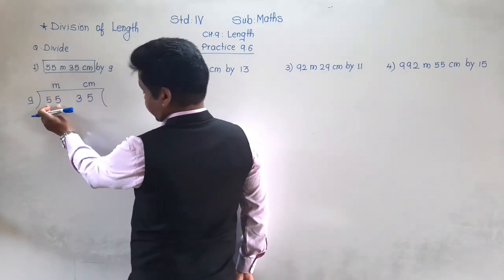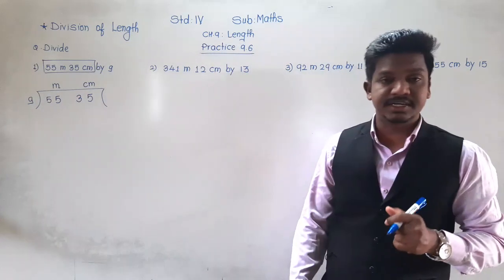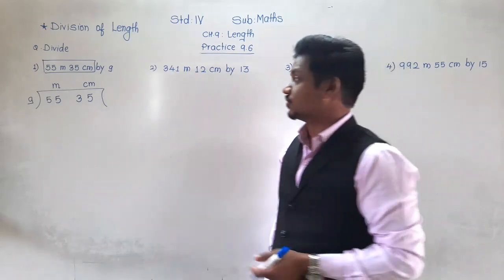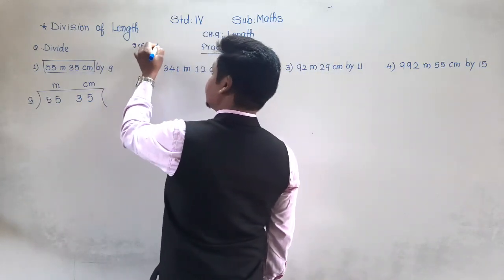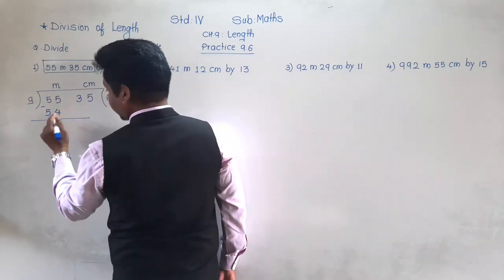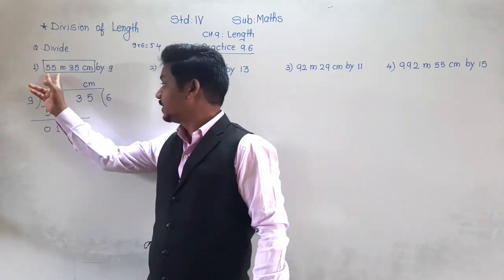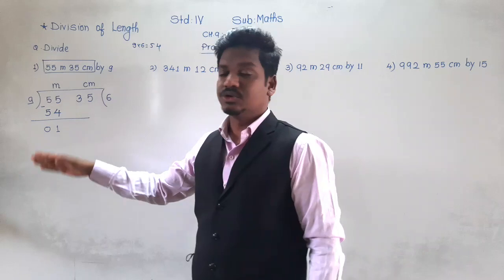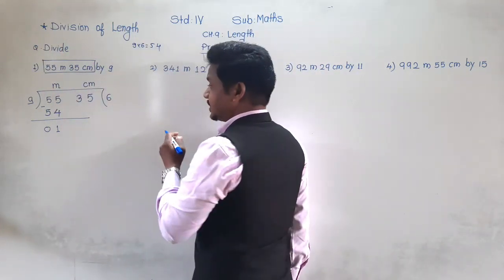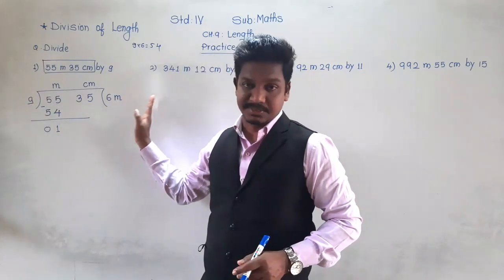First, we divide the meter column. There are 55 meters. Is 55 in the table of 9? The smaller number than 55 in the table of 9 is 54. 9 sixes are 54. Subtract 54 from 55: 5 minus 4 is 1, 5 minus 5 is 0. So we have divided the meter column. The quotient so far is 6 meter.